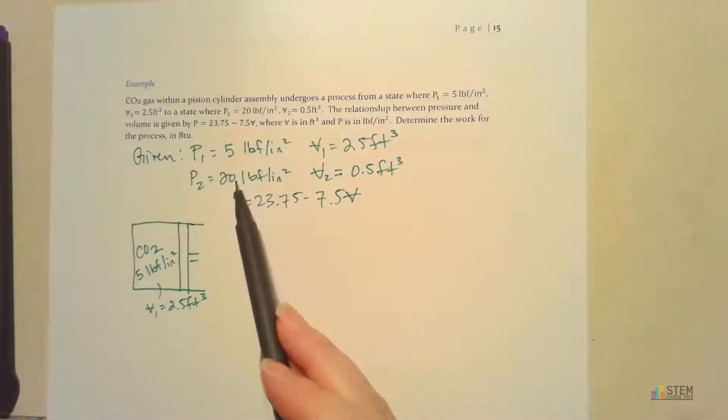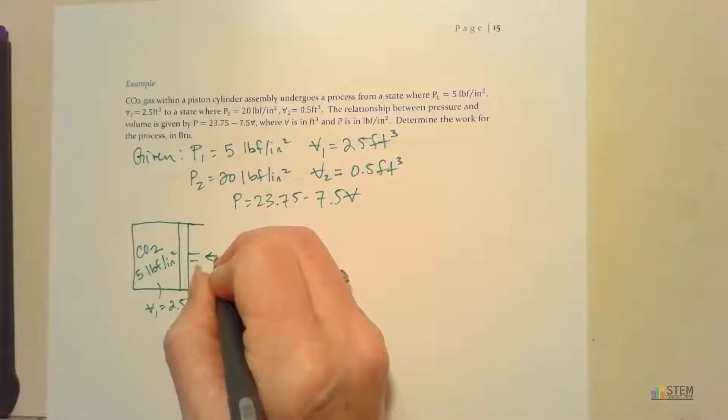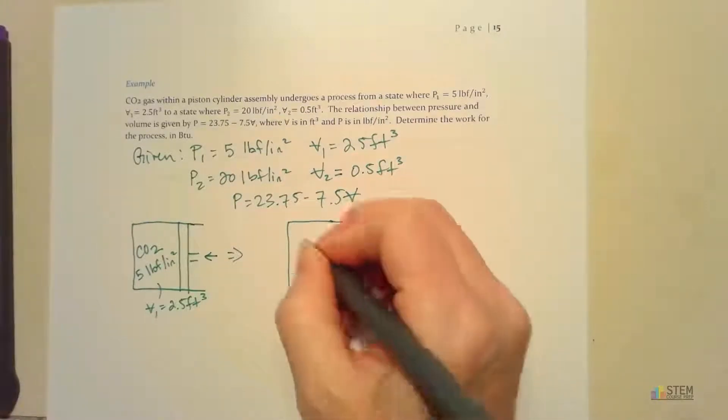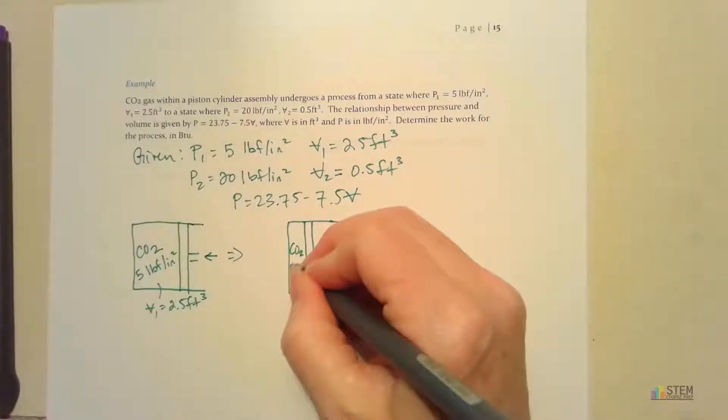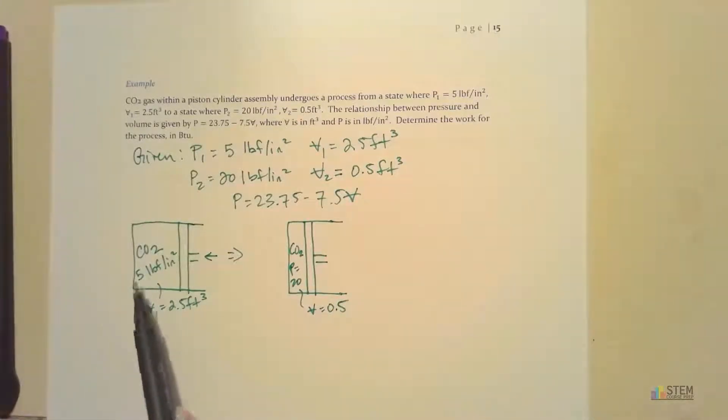Now let's see what happens. The pressure increases and volume decreases, so we're pushing this piston to the left because we're reducing the volume. At the second state, the piston is further to the left. We still have CO2 but now the pressure is 20 and the volume is much smaller. Since we had a volume change, we know work was done. It's helpful to draw these pictures so you can visualize what's going on. Pressure went up as volume went down.